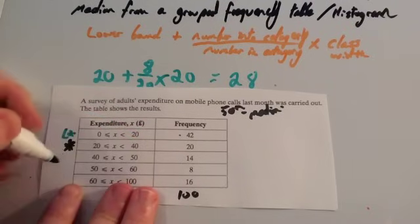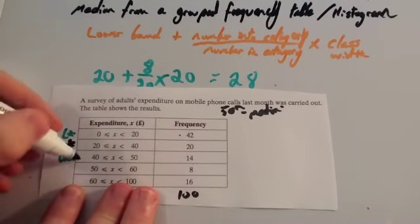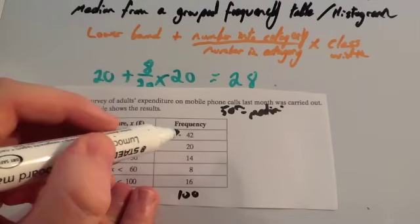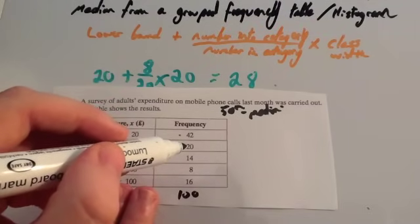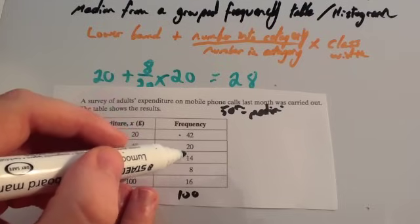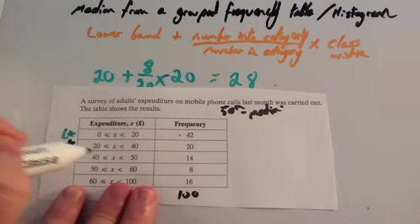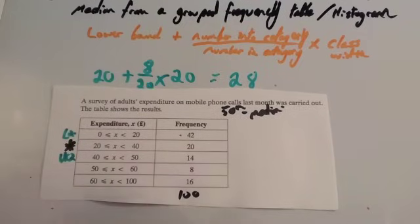So it's just in this category here. So the upper quartile is in that one. And so the lower bound would be 40 plus number into category. Well, that's 62 to get the 75. You'd have to add on 13. So it's 13 out of 14 times by the class width, which is 10. And then that would work out the upper quartile for you. So that's how you find the lower quartile or the upper quartile or the median for a frequency table.